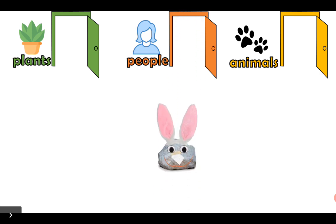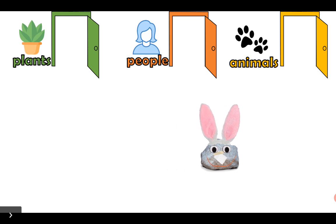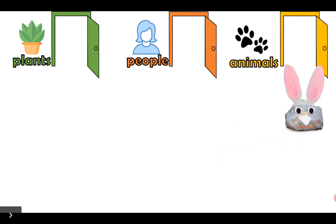What type of living thing is this rabbit? Is this a plant? Is this a person? Or is this an animal? Very good! This rabbit is an animal! Stop! Stop! You are not an animal! I think you are a rock! You are Rocky! You are not a living thing! You are a non-living thing! Oh dear, this rock is very naughty!